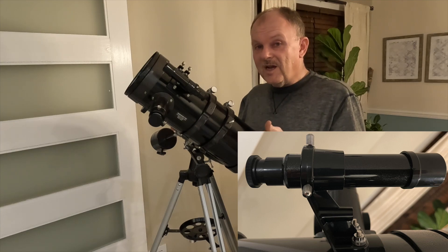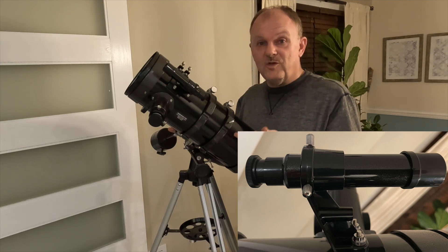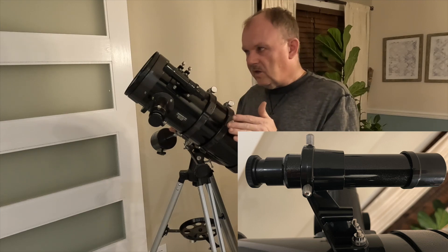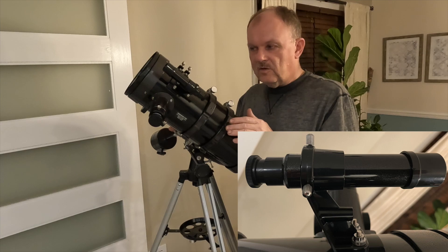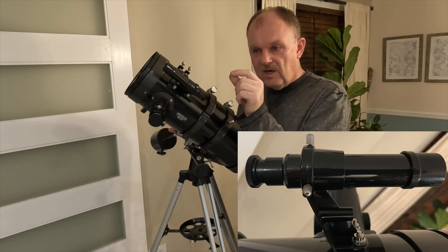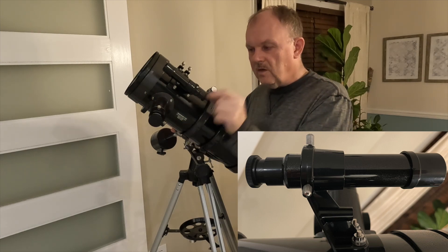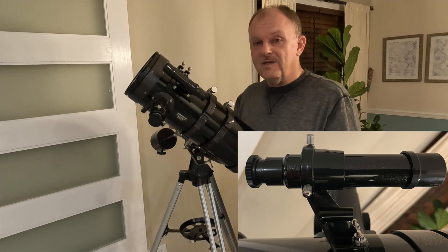That alignment is actually easier in the daytime with a terrestrial target, like looking down the street or across your property at some object that's easy to locate during the day, and then you do the alignment with the main telescope. But at night, it's much harder to get it realigned.